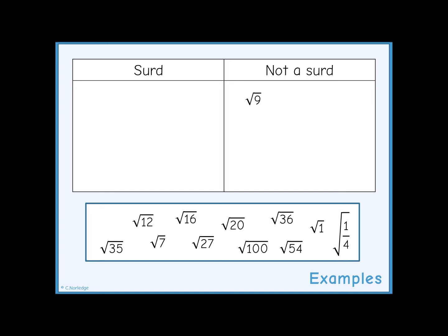The square root of 12, if you evaluate on a calculator, is 3.4641 and so on. It's an irrational number, so root 12 is a surd.